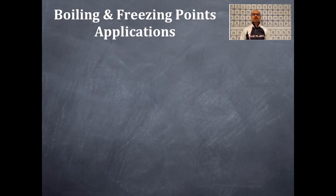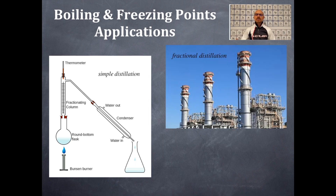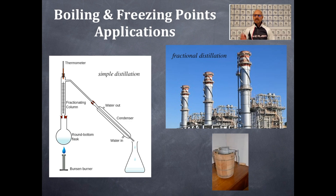But first, let's do a couple of applications so you know why boiling points and freezing points are so important. Here's a simple distillation apparatus. If you have two different liquids with two different boiling points, you can separate those two different liquids. It's a wonderful application. The next application is with fractional distillation, and in the industrial world, we separate oils, gasoline, and all kinds of petroleum products with fractional distillation methods with various different boiling points. Then our next application is the most fun — making homemade ice cream.